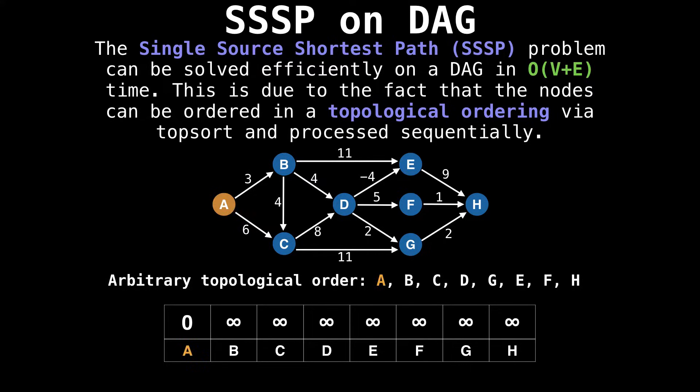The first step of the algorithm is to set the distance to the starting node to be zero. In this case, since A is the starting node, its initial distance is zero because we're already there.